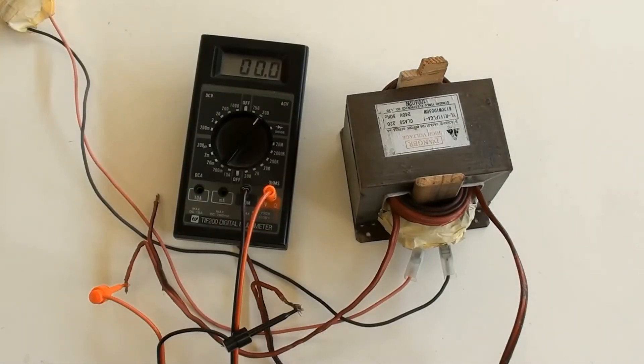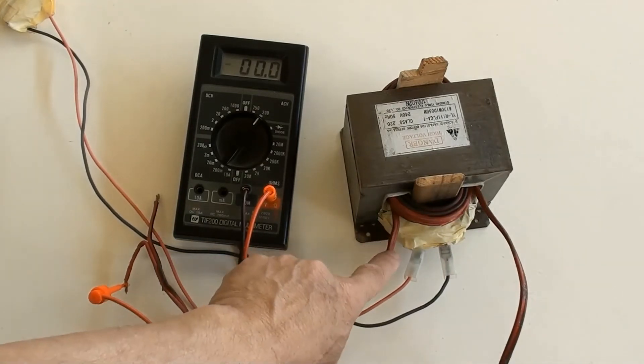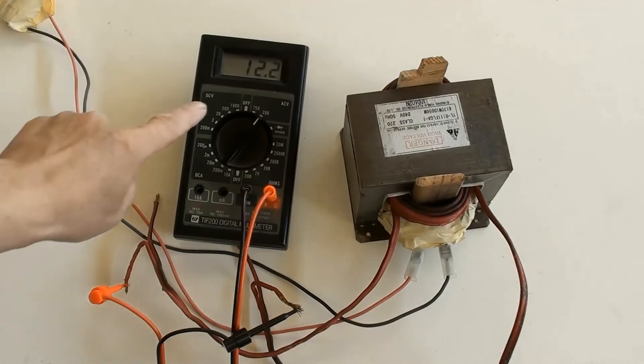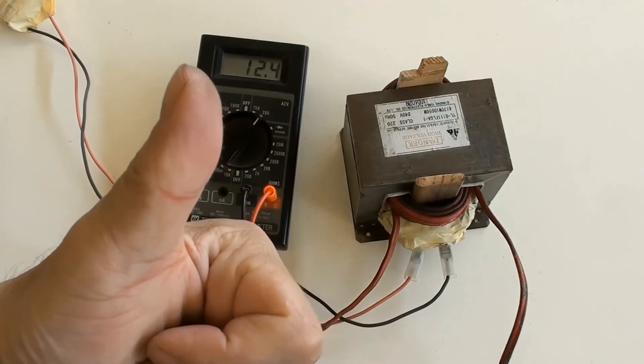To test run, live power has been connected to primary terminals here, and secondary terminals have been connected to multimeter probes at AC 200 volt position. Switch the power on. Multimeter has indicated AC 12.4 volt. That's good.